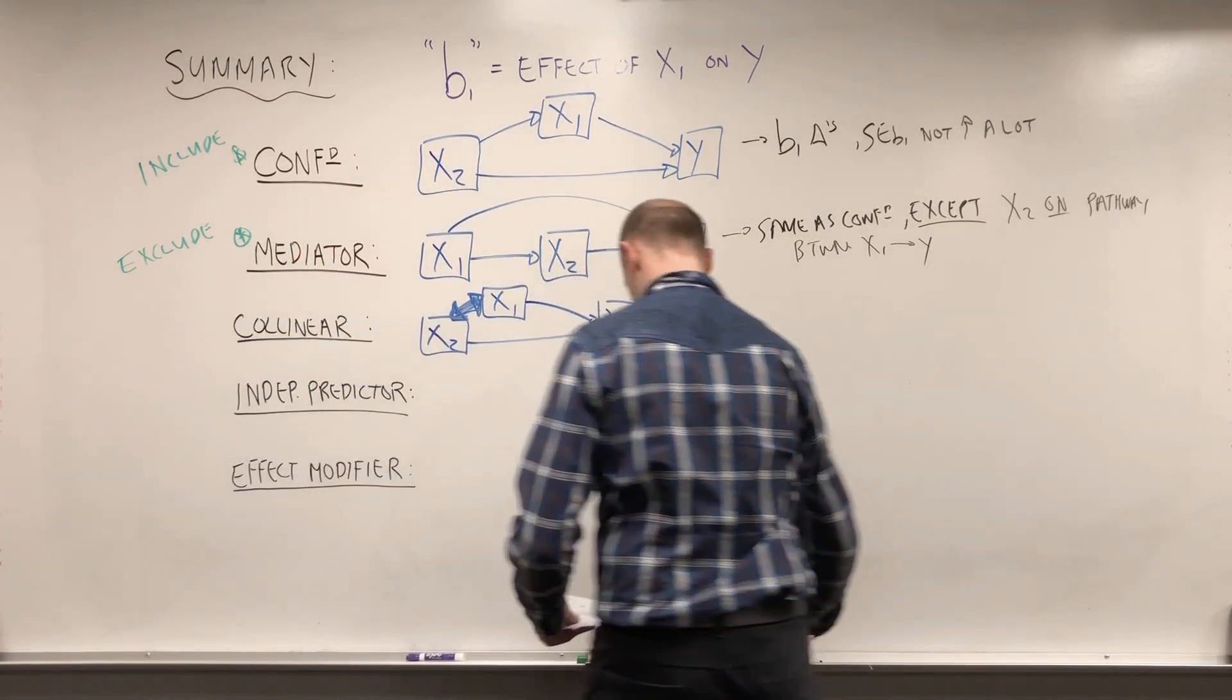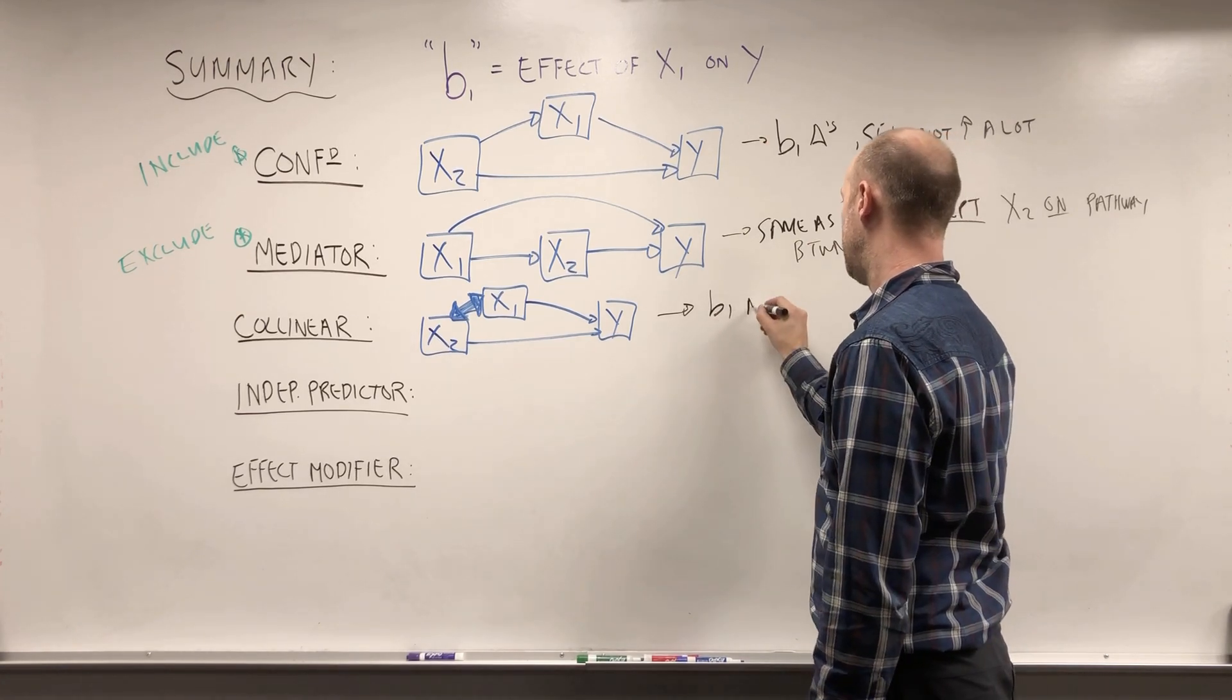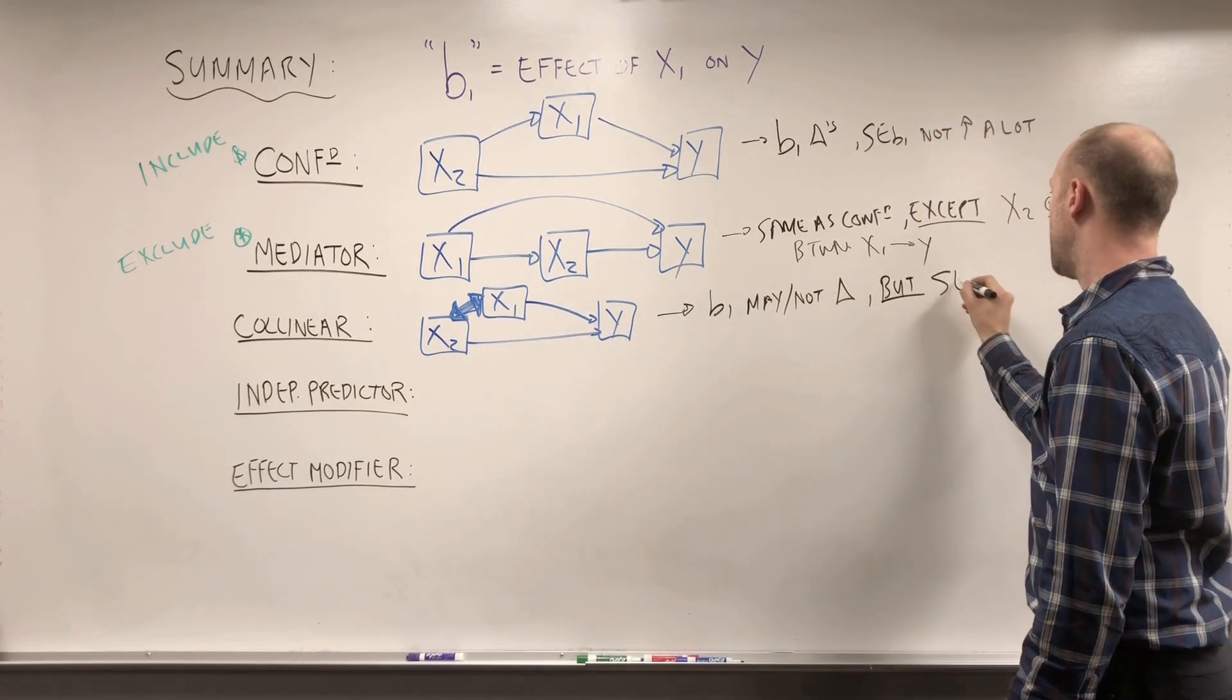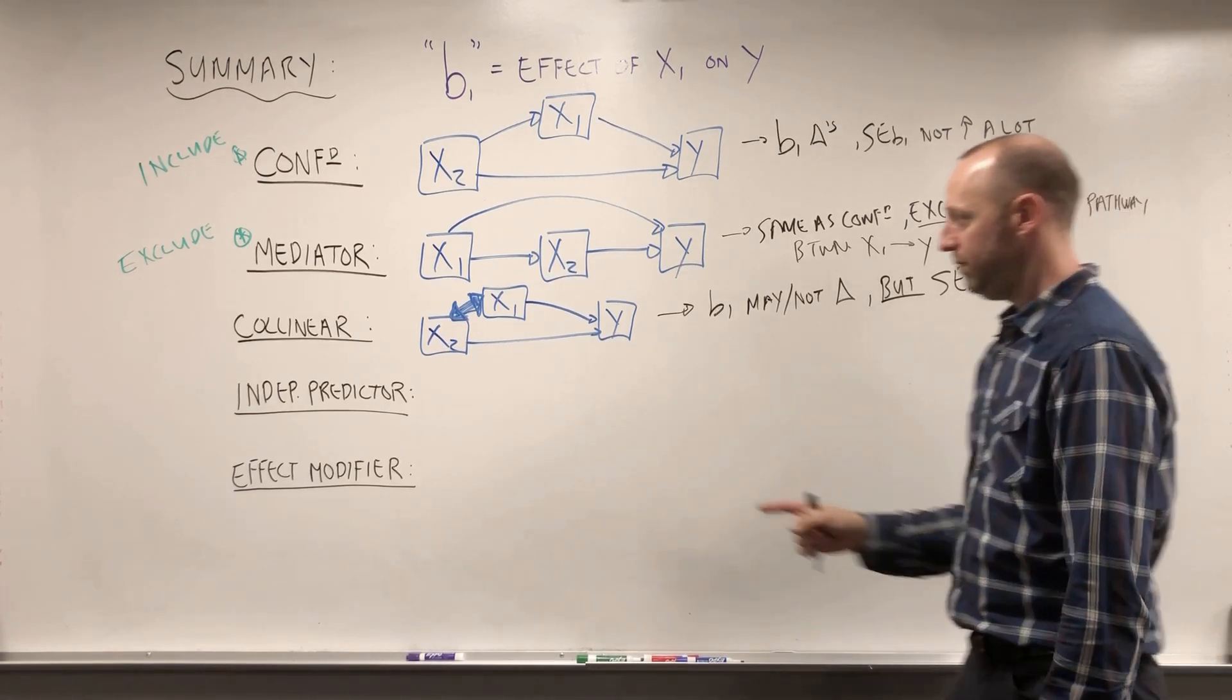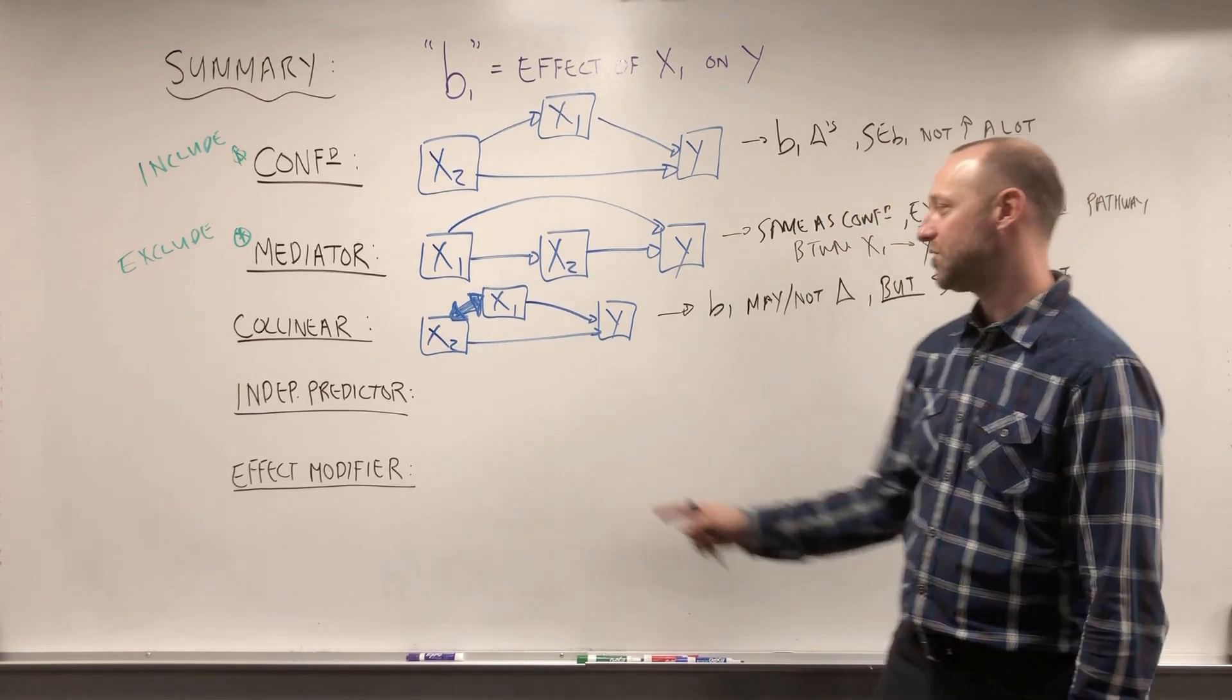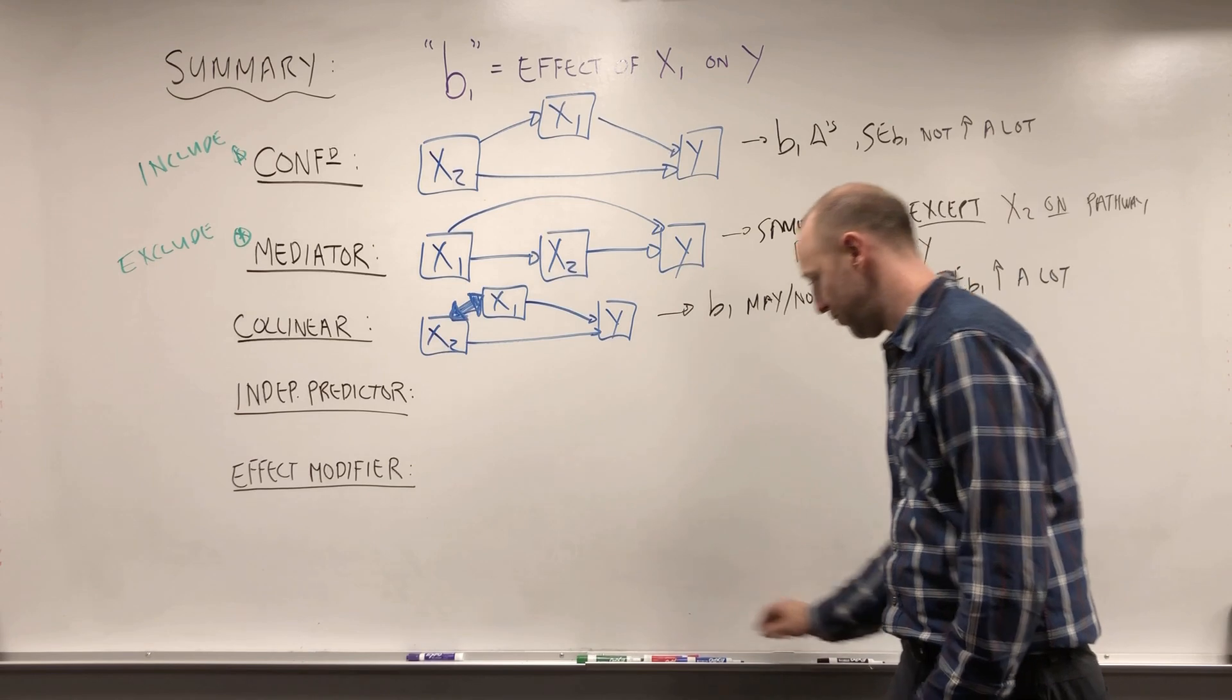And the way we can identify these numerically is that when we adjust for X2, when we include it in the model, B1 may or may not change. But what we're going to see is the standard error of B1 is going to increase a lot. And so if X1 and X2 are so highly associated, we get a lot of uncertainty in the estimate of the effect of X1 on the outcome. We'll also see the standard error of B2, right? The standard error for X2's coefficient inflate as well. But B1 is the coefficient we're focusing on.